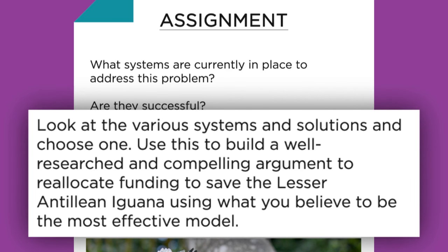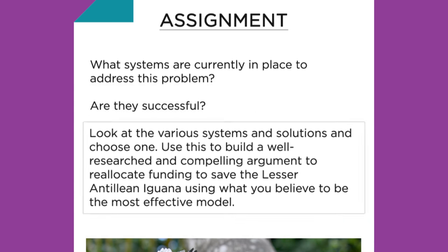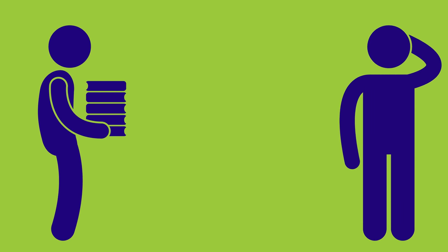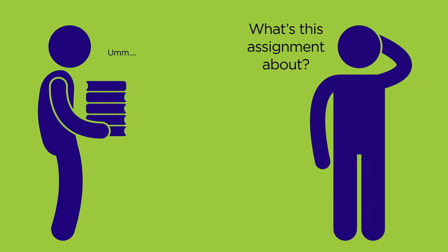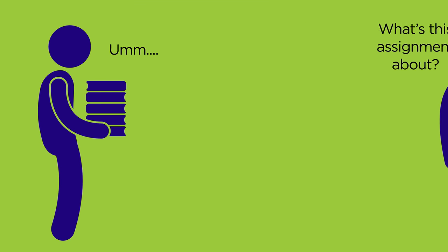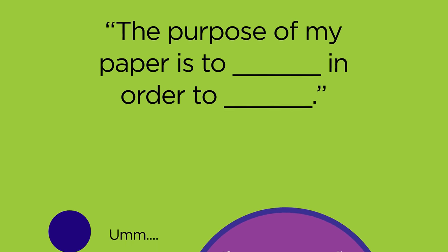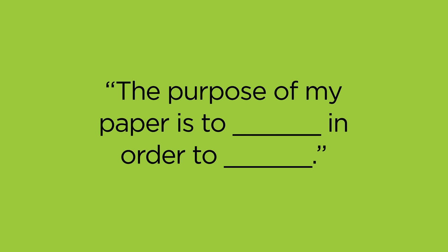The third sentence — the actual assignment — is to build a well-researched and compelling argument, indicating that the paper must be argumentative and use quality resources. It is important to understand the assignment and your role in completing it. If you cannot easily give a basic description of the task, review the assignment sheet or ask your teacher for clarification.